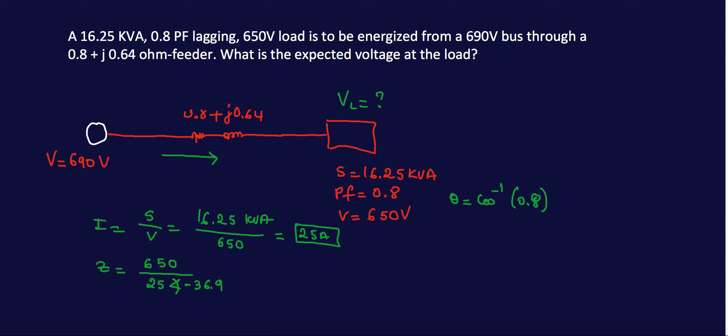We have a lagging power factor, so you have minus angle 36.87 degrees. So this is your Z load. This gives me, when I do the math, 26 ohms with an angle of 36.9 degrees.